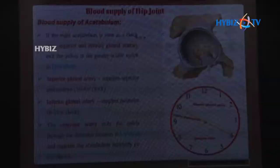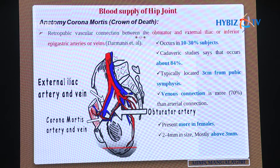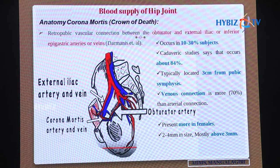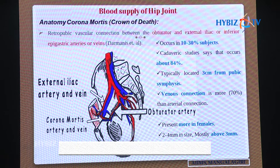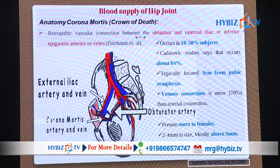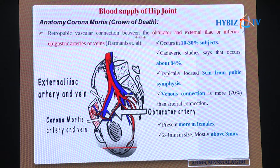The corona mortis, or crown of death, is a retropubic vascular connection between the obturator and external iliac or inferior epigastric arteries or veins, occurring in 10 to 30% of subjects in clinical reports. Cadaveric studies, including our own statistics from workshops at my alma mater and Dy Patil Hospital, account for 84%. It is typically located around 3 cm from the pubic symphysis. The venous connection is even more prevalent — almost 70% compared to the arterial — and is present more in females, though there is no literature explaining why. It is approximately 2 to 4 mm in size, most cases above 3 mm.